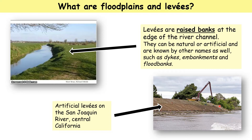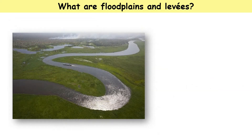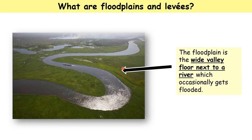This picture here shows an artificial levee — you can see the digger here constructing it. This one is the San Joaquin River in central California. Meanwhile, if we look at what floodplains are, these are flat areas of land next to the river that would become covered in water during a flood.